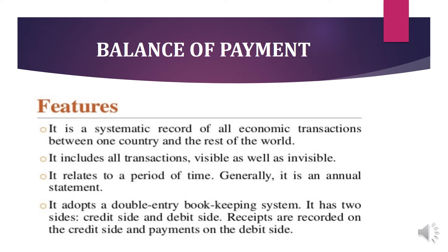Features of Balance of Payment: It is a systematic record of all economic transactions between one country and the rest of the world. It includes all transactions — visible as well as invisible. It relates to a period of time; generally it is an annual statement. It adopts a double entry bookkeeping system. It has two sides — debit and credit. Receipts are recorded on the credit side and payments on the debit side.